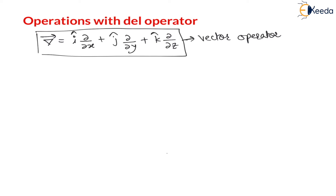Now, what we can do by operating this vector operator — what are the different operations on this vector operator — that we have to learn in this chapter. First, let us understand the different types of operations we can do with a vector.